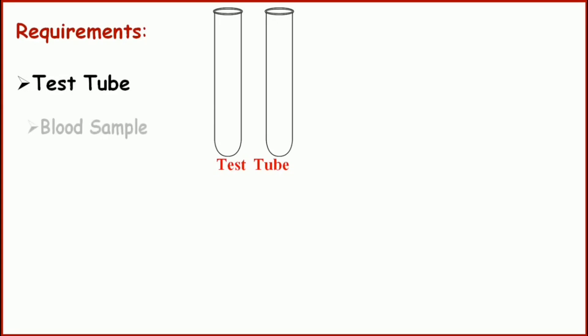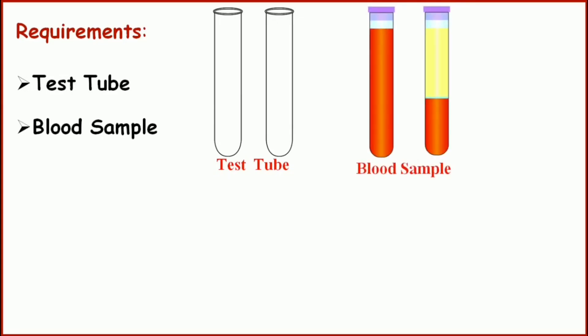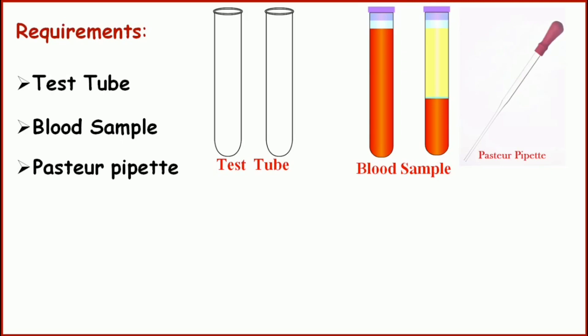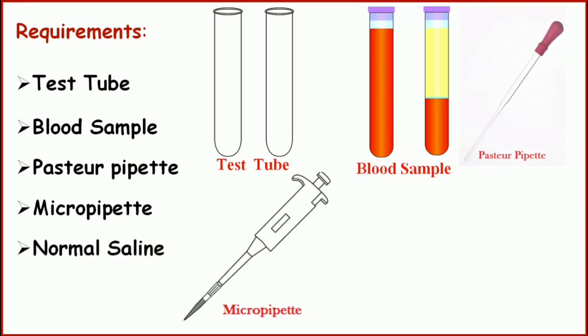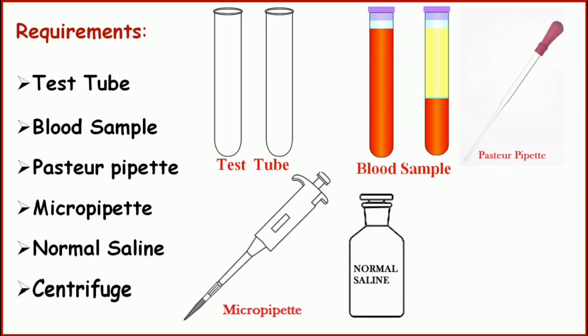So here in this video, I am going to explain how we are going to prepare 5% and 10% red cell suspension. Requirements for preparation are: we need 2 glass test tubes, then we need a blood sample — the blood sample should be an EDTA blood sample. Only the packed cell or the sedimented red cells are required for the test; whole blood is not required. Then a Pasteur pipet, a micropipet for measuring 50 microlitres of sedimented red cells, normal saline which will be mixed with the sedimented red cells, and finally a centrifuge machine to centrifuge the mixture of blood and normal saline.